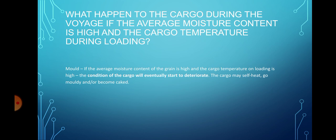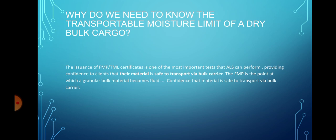So, what happens to the cargo during the voyage? If the average moisture content of the grain is high and the cargo temperature at loading is also high, the condition of the cargo will eventually start to deteriorate. The cargo may self-heat, go moldy, and/or become baked or caked.